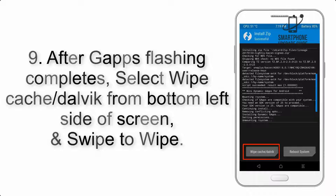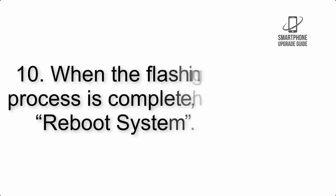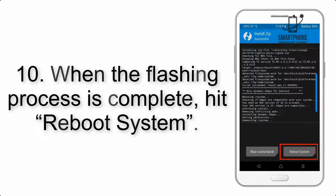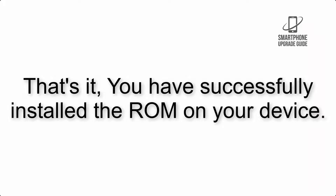Step 8: Flash the GApps zip package in the same manner. Step 9: After GApps flashing completes, select Wipe Cache and Dalvik from the bottom left side of the screen and swipe to wipe. Step 10: When the flashing process is complete, hit Reboot System. That's it — you have successfully installed the ROM on your device.